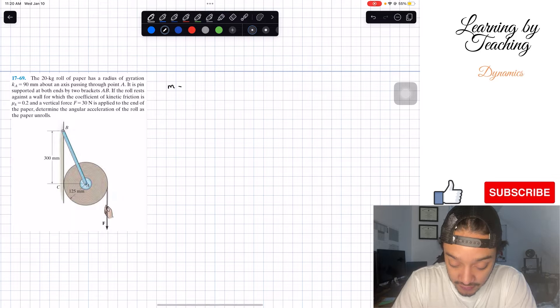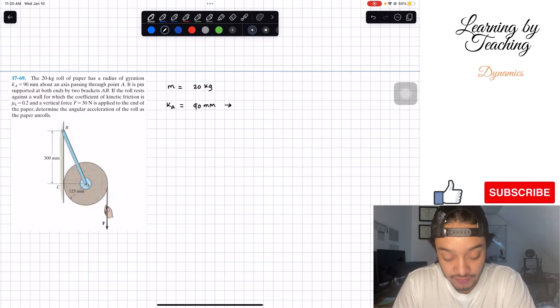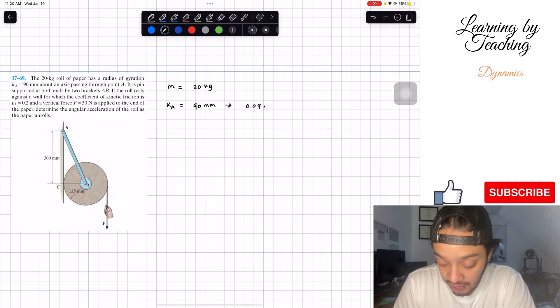The first thing they give us is that our mass is 20 kg. Then we're given our radius of gyration k of A of 90 mm. I'm going to convert this into meters because these are the most standard units, so we got 0.09 meters.